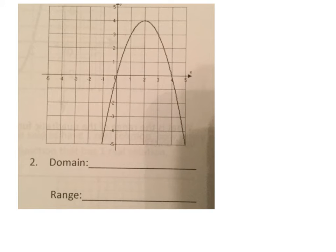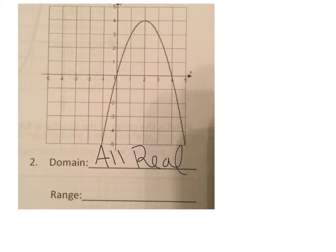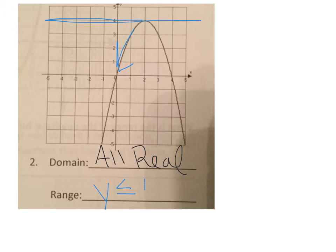Same thing for number 2: we have a vertical parabola, so we know off the bat that domain is all real numbers. Then we have to find the range. This time the highest value is y equals 4 and the parabola is moving downward, which means y has to be less than or equal to 4.